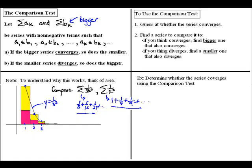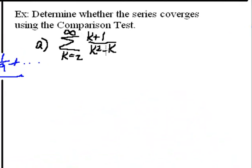To use the comparison test, we basically have two tasks. First, we need to guess whether the series we're interested in converges or diverges. Second, we then need to find a series to compare it to. Our first example: we're going to determine whether the series converges using the comparison test. The series we're going to look at in part a is the series from k equals 1 to infinity of k plus 1 over k squared minus k.